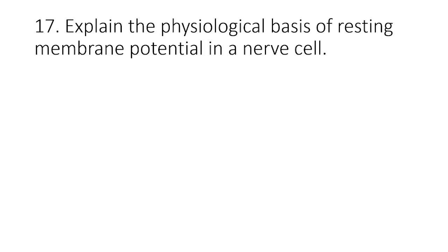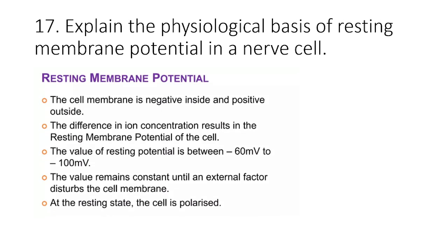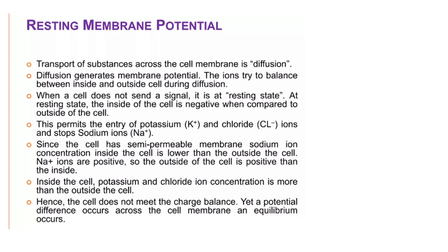Explain the physiological basis of resting membrane potential in the neuron cell. Resting membrane potential because of the cell membrane which is negative from the inside, positive from the outside. Normally it is minus 60 to minus 100 millivolt. This is because of the entry of potassium and chloride ions and stoppage of the sodium ions. The diffusion of the potassium ions leads to the resting membrane potential.